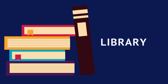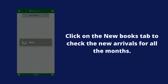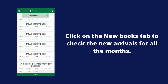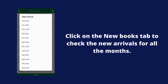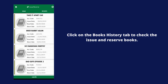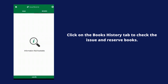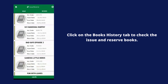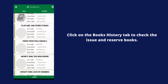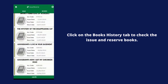Let's move on to the Library tab. Once you click on the New Books tab, you can check all the new arrivals for all the months. Click on the Books History tab to check the books you have issued and the books you have reserved.